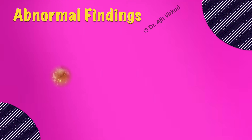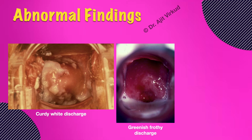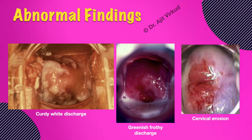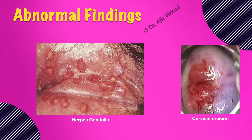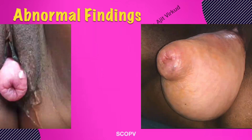During the per speculum examination, several abnormal findings may be observed. These include curdy white discharge or greenish frothy discharge. Purulent and foul-smelling vaginal discharge is indicative of vaginitis. The cervix may reveal abnormal findings such as cervical erosion, ectropion, cervical polyps, ulcers, or neoplastic growth. Vesicles or ulcers may indicate herpes or syphilis. Bleeding on touch is suspicious for carcinoma of the cervix. Descent of the cervix and/or vagina is indicative of pelvic organ prolapse.